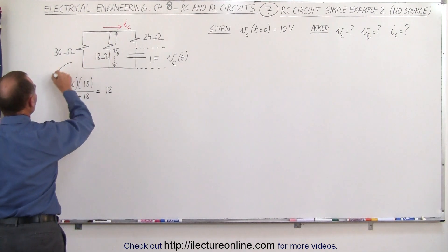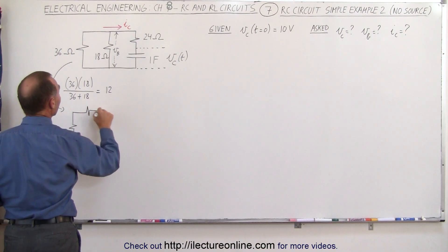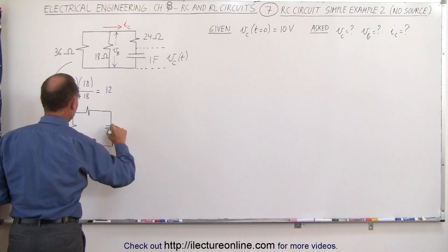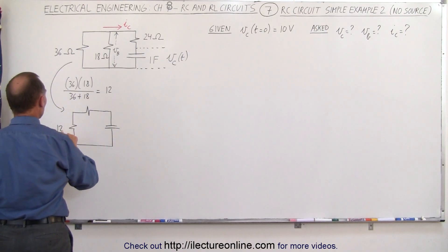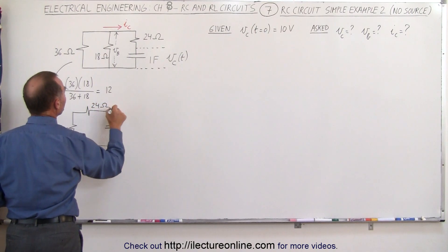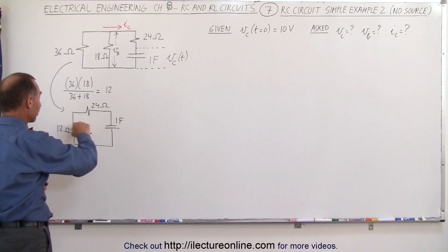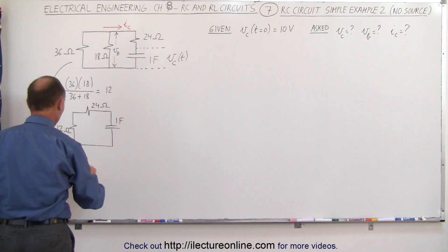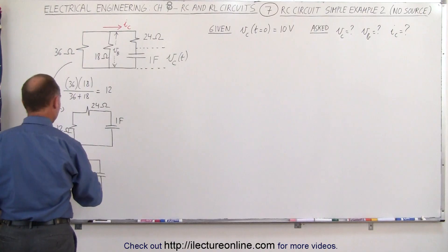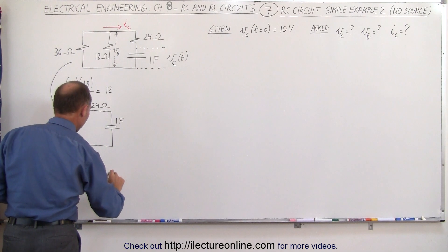We're going to redraw this circuit with those two parallel resistors as a single 12 ohm resistor. We still have the 24 ohm resistor and the 1 farad capacitor. Now we can see this is simply a series circuit. Combining those two resistors gives us a total equivalent circuit with a single 36 ohm resistor and a single 1 farad capacitor.